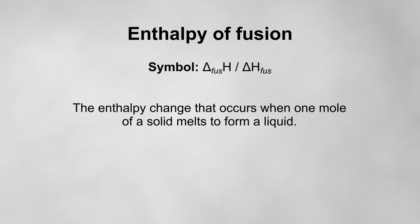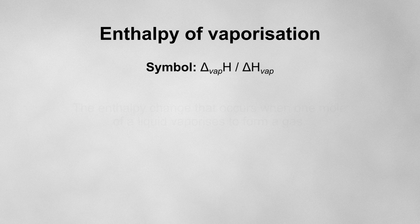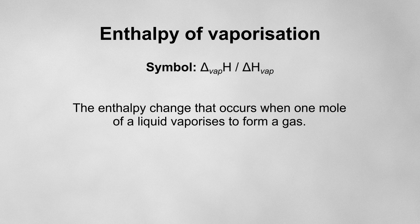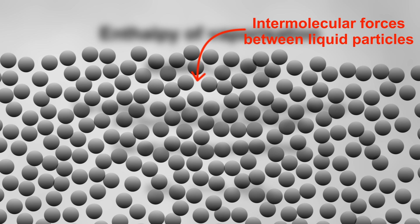The enthalpy of fusion has a somewhat confusing name — it's actually the enthalpy change that occurs when one mole of a solid melts to form a liquid. For example, this equation shows the enthalpy of fusion for water. It is always positive because it requires energy to break the bonds between solid particles, so the process is endothermic. The enthalpy of vaporization is the enthalpy change that occurs when one mole of a liquid vaporizes to form a gas, as shown for water. It is always positive because it requires energy to break the bonds between liquid particles, so the process is endothermic.